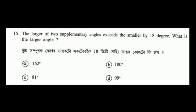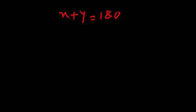Next question: the larger of two supplementary angles exceeds the smaller by 80 degrees. What is the larger angle? Two supplementary angles together equal 180 degrees.